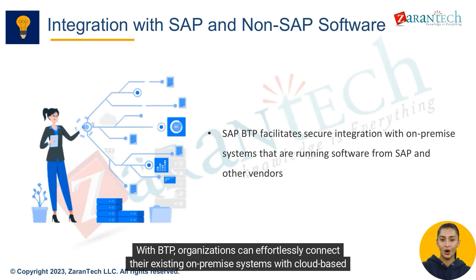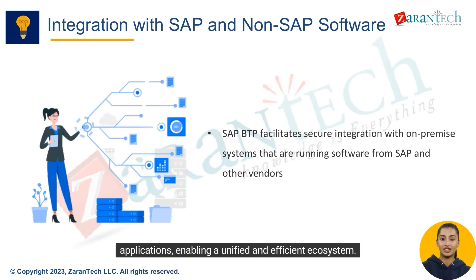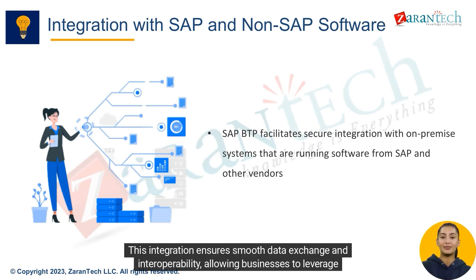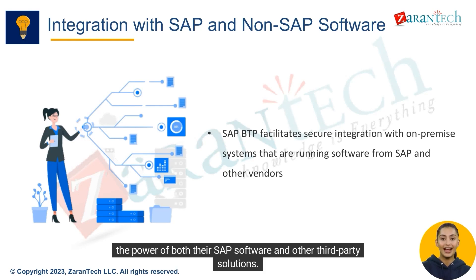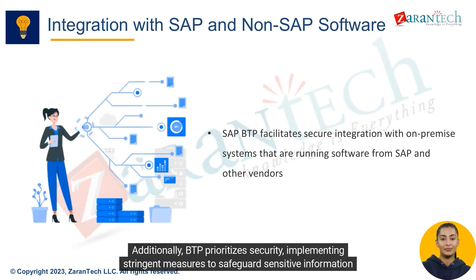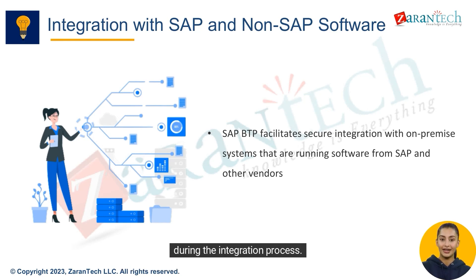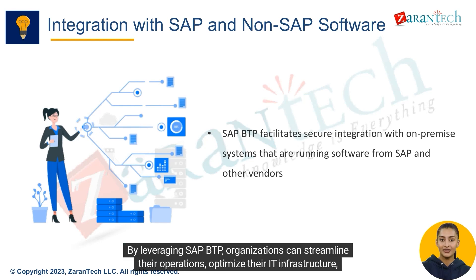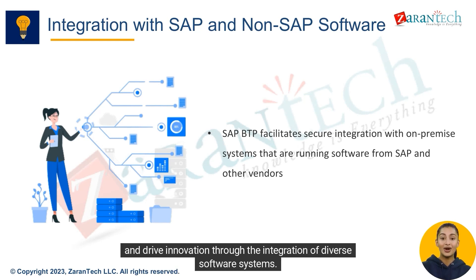With BTP, organizations can effortlessly connect their existing on-premise systems with cloud-based applications, enabling a unified and efficient ecosystem. This integration ensures smooth data exchange and interoperability, allowing businesses to leverage the power of both their SAP software and other third-party solutions. Additionally, BTP prioritizes security, implementing stringent measures to safeguard sensitive information during the integration process.